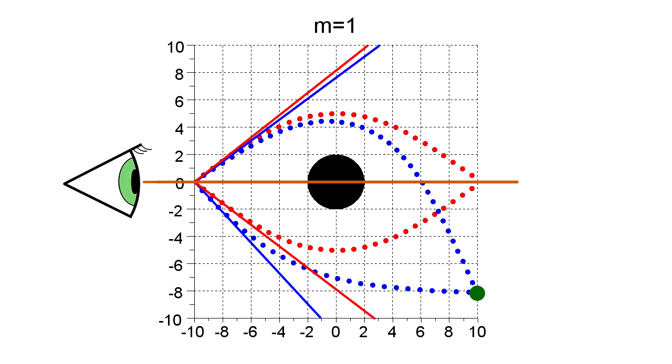There will still generally be two paths by which light can reach our eye from the object, the blue paths, but they will not be symmetric about the brown line. So, we will see them at only one place in the sky. The solid red lines are where we see Einstein's ring, and the solid blue lines are where we see the two images of this object.